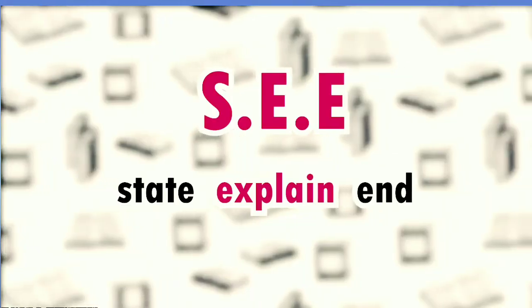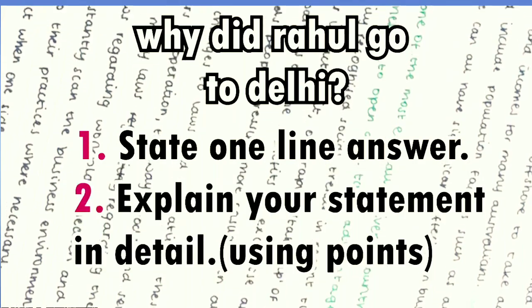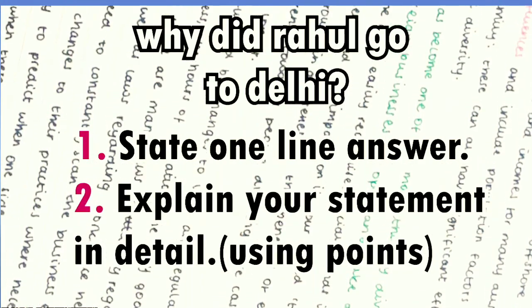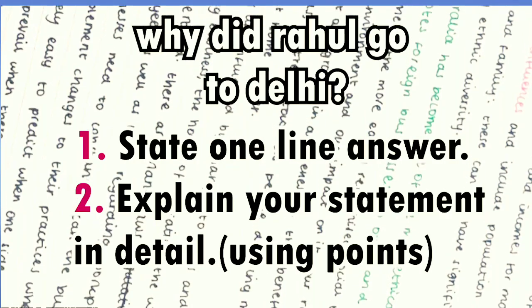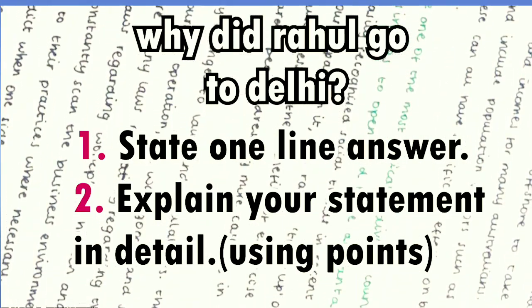Then, the second part is E, Explain. After you state the obvious answer in one line, you will explain it in detail. So, the statement was to meet his mother. You can explain it like this: